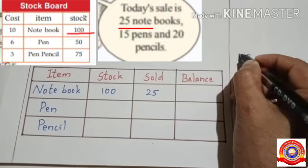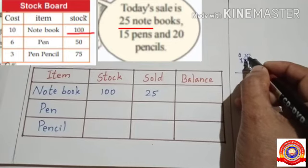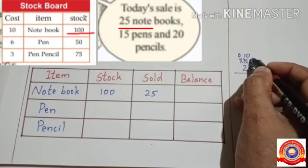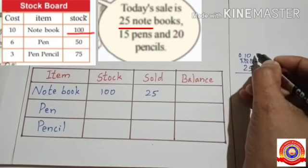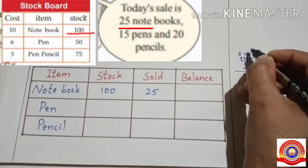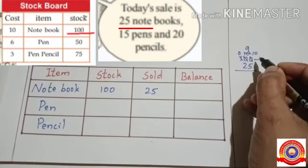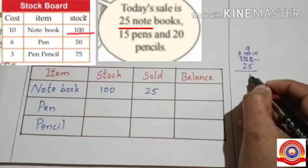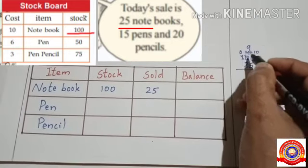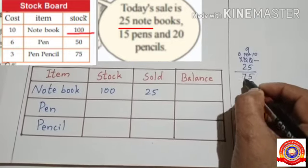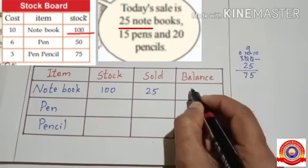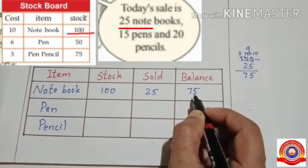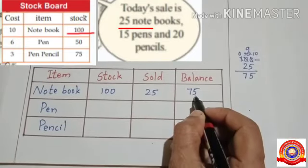1 becomes 0. Then again borrow 1 from 10. Then 0 becomes 10 and 10 becomes 9. 10 minus 5 is 5. 9 minus 2 is 7. So the answer is 75. So the balance number of notebooks is 75.